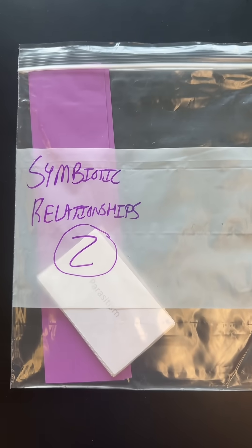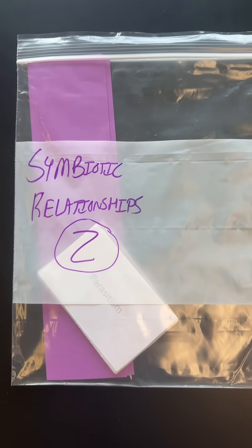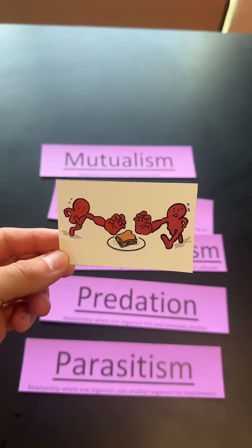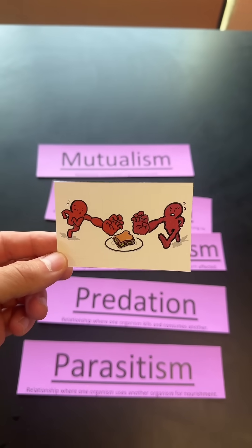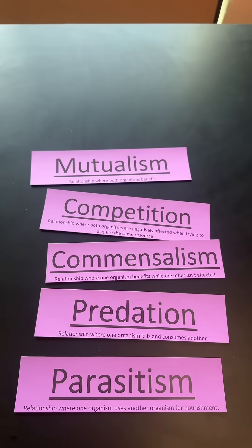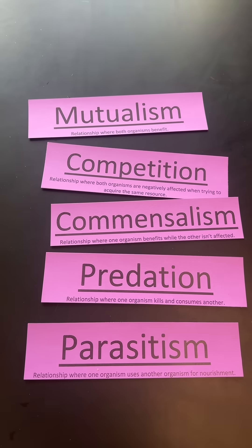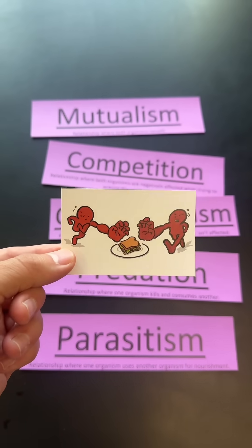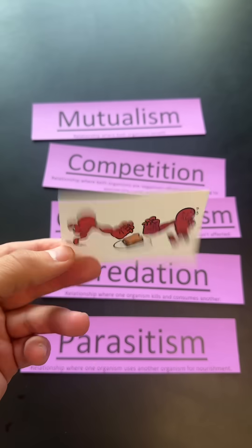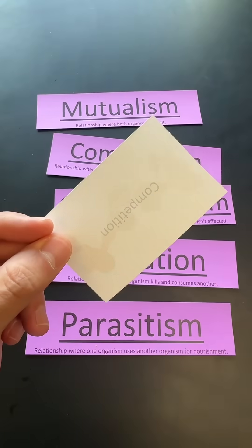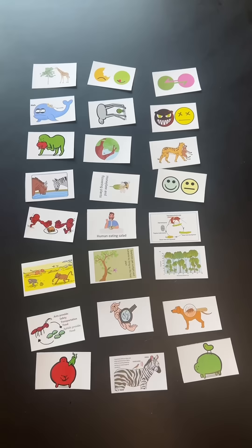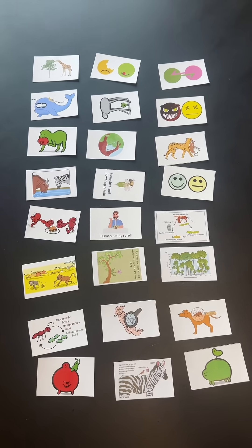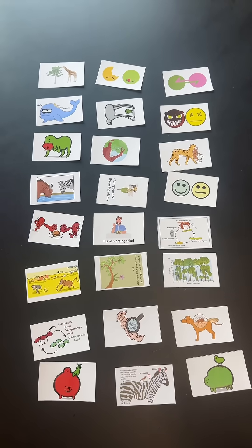To start off class, my students are going to do two different organizers. The first one is a symbiotic relationship organizer, where students take these cards and try to figure out what type of relationship they are showing. And like always with my organizers, the answer is on the back. These are all the cards that students have to work through.